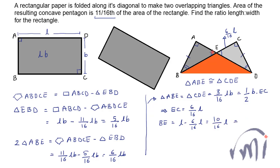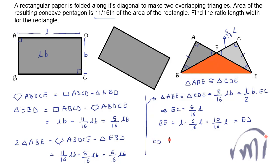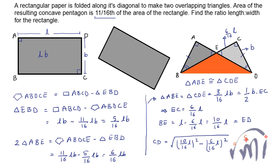B, E equals E, D because the two triangles are congruent. So now we can find the length C, D — which equals b, the breadth of the original rectangle — as the square root of (10/16 · L)² minus (6/16 · L)², which equals 8/16 · L = half of L. So b equals L/2, or the ratio between length and breadth is 2:1. The length is actually double the breadth of the rectangle.